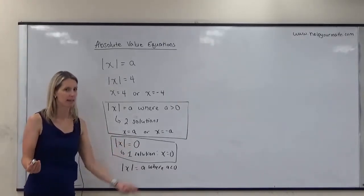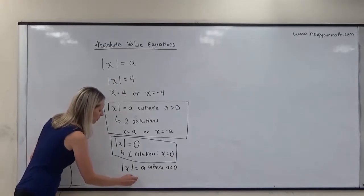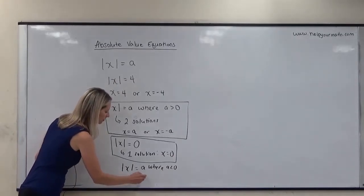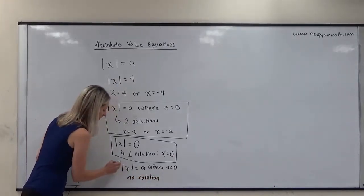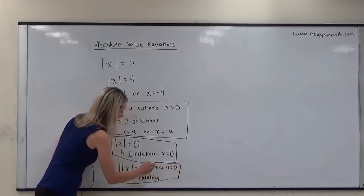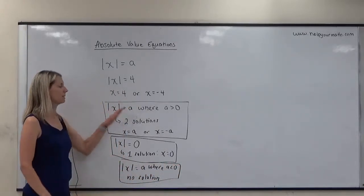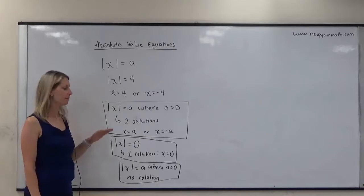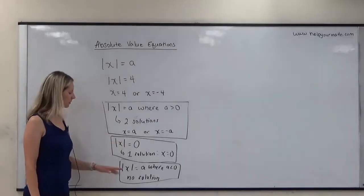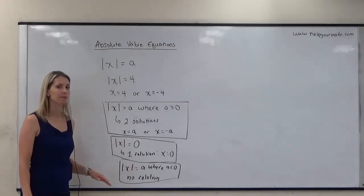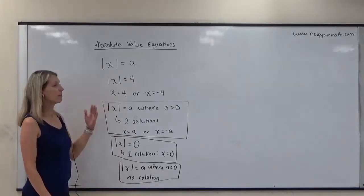A non-negative value cannot equal something negative, so we say there is no solution. To summarize, there are three cases: the absolute value equals something positive, equals zero, or equals something negative.